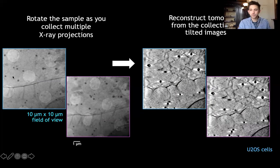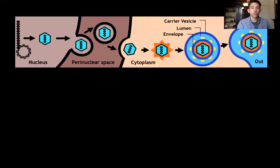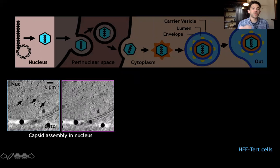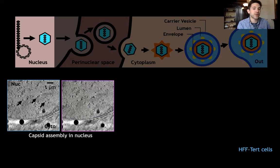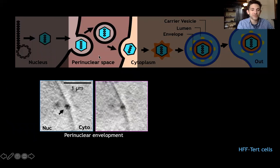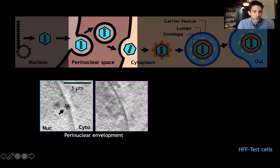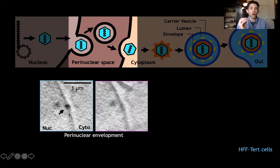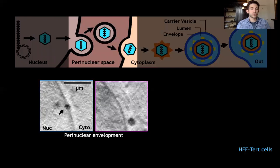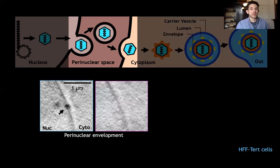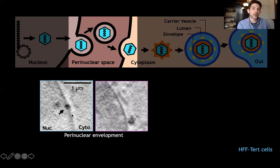With this imaging technique, we can study each stage of the assembly pathway. We can see capsids assembling in the nucleus — these black spots — which we don't see in uninfected cells, and they're 125 nanometers in diameter, the right width to be capsids. We can also see them crossing the nuclear envelope. Here, this particle is within the two leaflets of the nuclear envelope and actually appears to distend them on either side. This event is quite difficult to capture by EM because it's short-lived, but with tomography, because we can image the entire depth of the field of view, we're more likely to capture it.